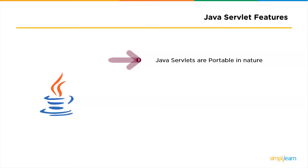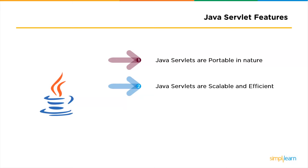The second feature is: Java servlets are efficient and scalable. Once a servlet is deployed and loaded onto a web server, it can instantly start fulfilling the requests of clients. The web server invokes the servlet using a lightweight thread, so multiple client requests can be fulfilled at the same time using the multi-threading feature of Java. Compared to CGI, where the server has to initiate a new process for every client request, the servlet is truly efficient and scalable.